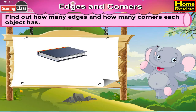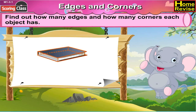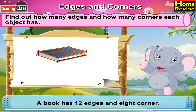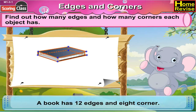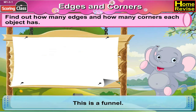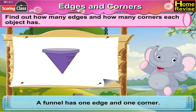The first object is a book. A book has twelve edges and eight corners. This is a funnel. A funnel has one edge and one corner.